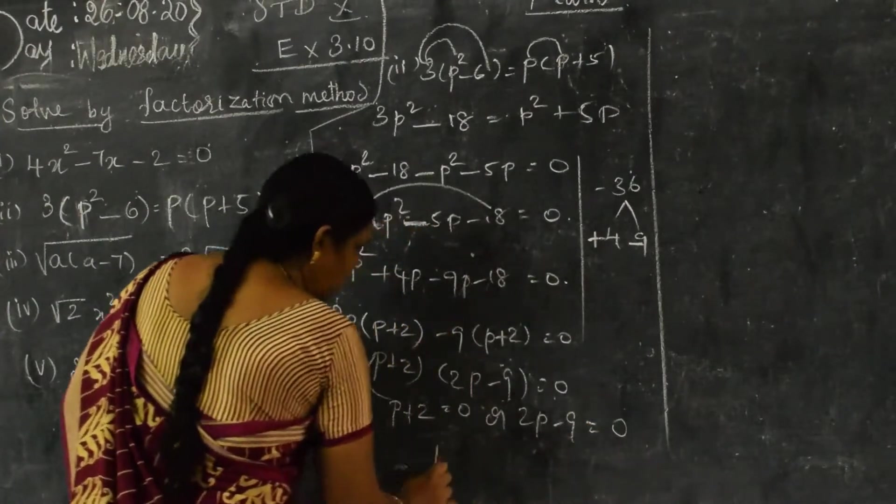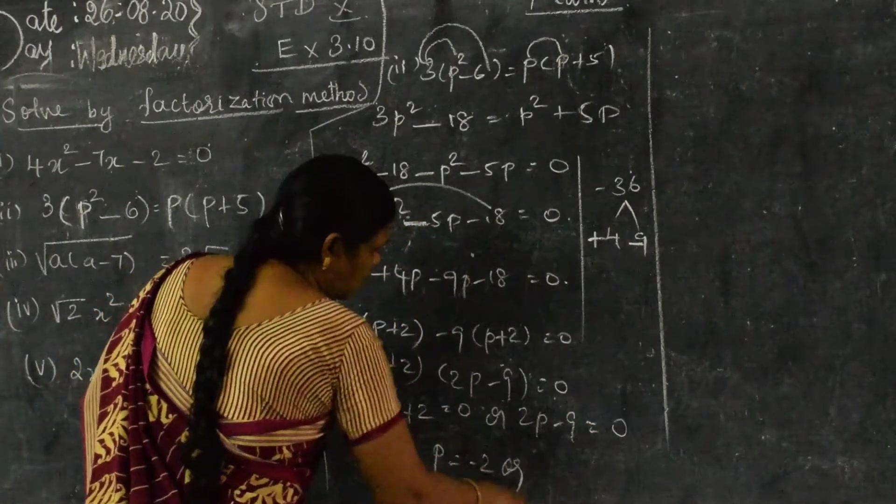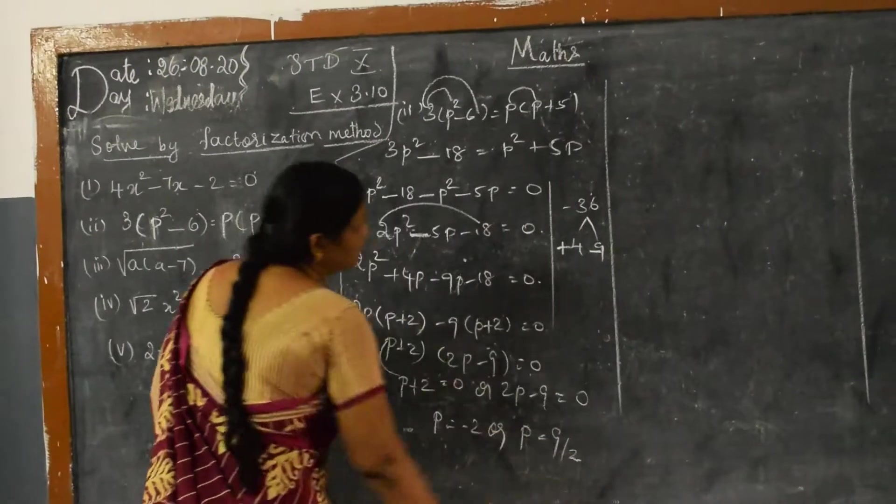So either p + 2 = 0 or 2p - 9 = 0, giving p = -2 or p = 9/2.